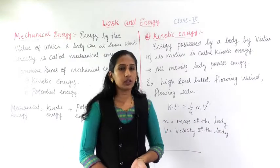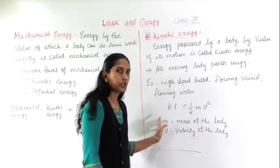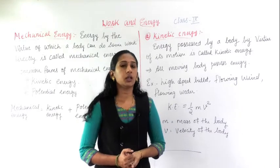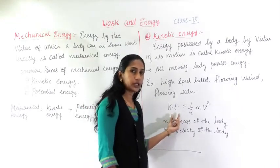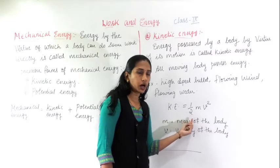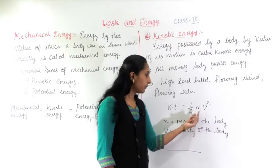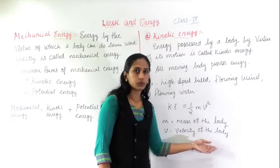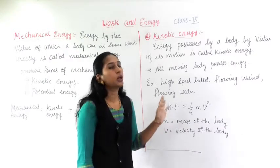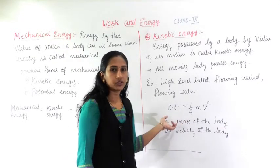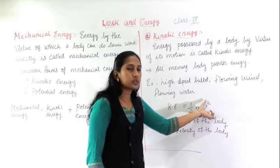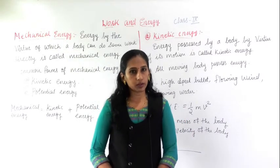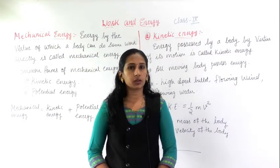Here is the formula for kinetic energy: Kinetic Energy = ½mv², where m is the mass of the object and v is the velocity of the object. We have a problem-solving period where we will solve problems related to kinetic energy, and when we study potential energy we will solve those problems too. Next period we will see the derivation of this kinetic energy equation. Till then, read the textbook and prepare your notes. Thank you.